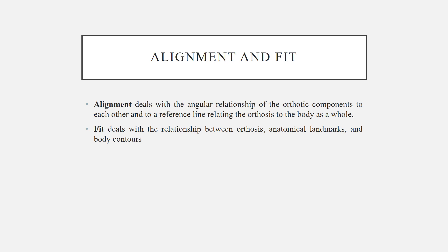What do we mean by alignment and fit? Alignment deals with the angular relationship of the orthotic components to each other and to a reference line relating the orthosis to the body as a whole, while fit deals with the relationship between the orthosis and anatomical landmarks and body contours.